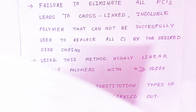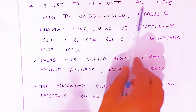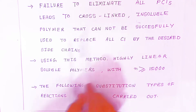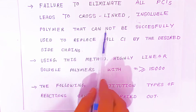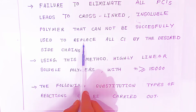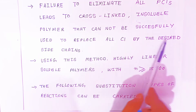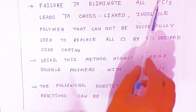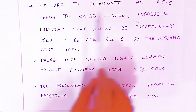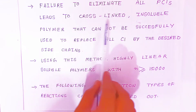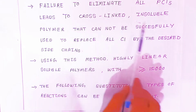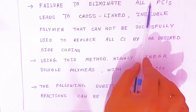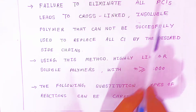Failure to eliminate all phosphorus pentachloride leads to cross-linked, insoluble polymers that cannot be successfully used to replace all chloride by the desired side chain. If you fail to remove phosphorus pentachloride, they will become cross-linked and you will not get the linear polyphosphorgens. So you have to remove all the phosphorus pentachloride.